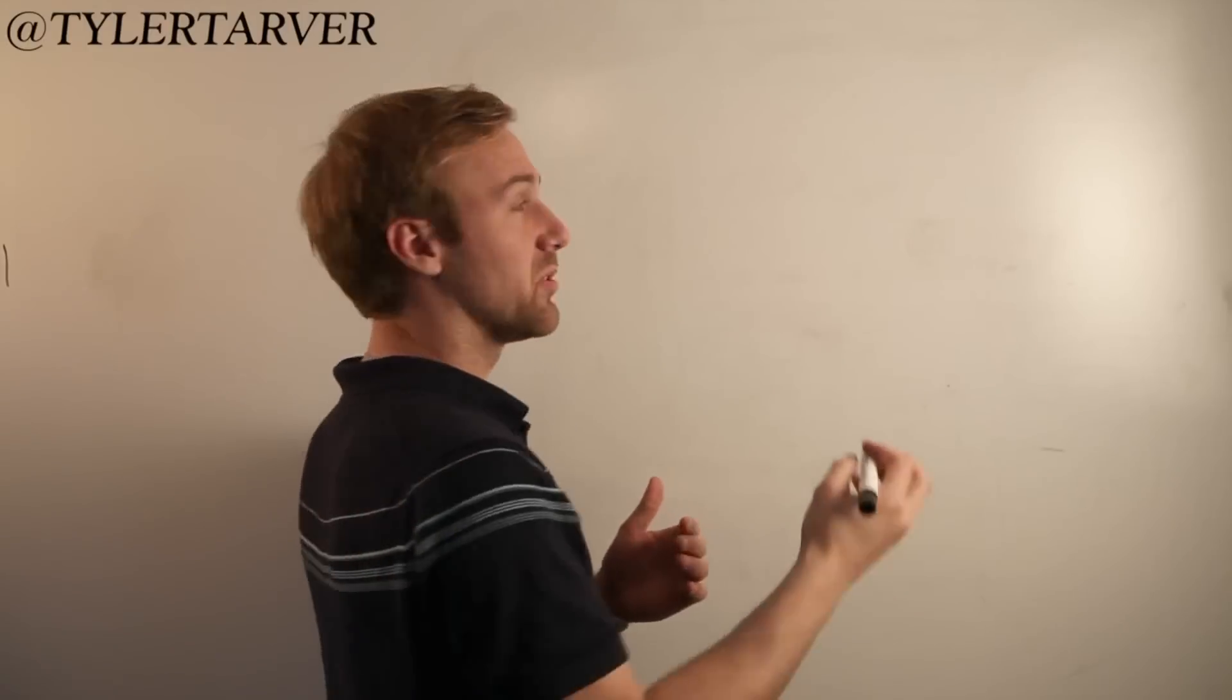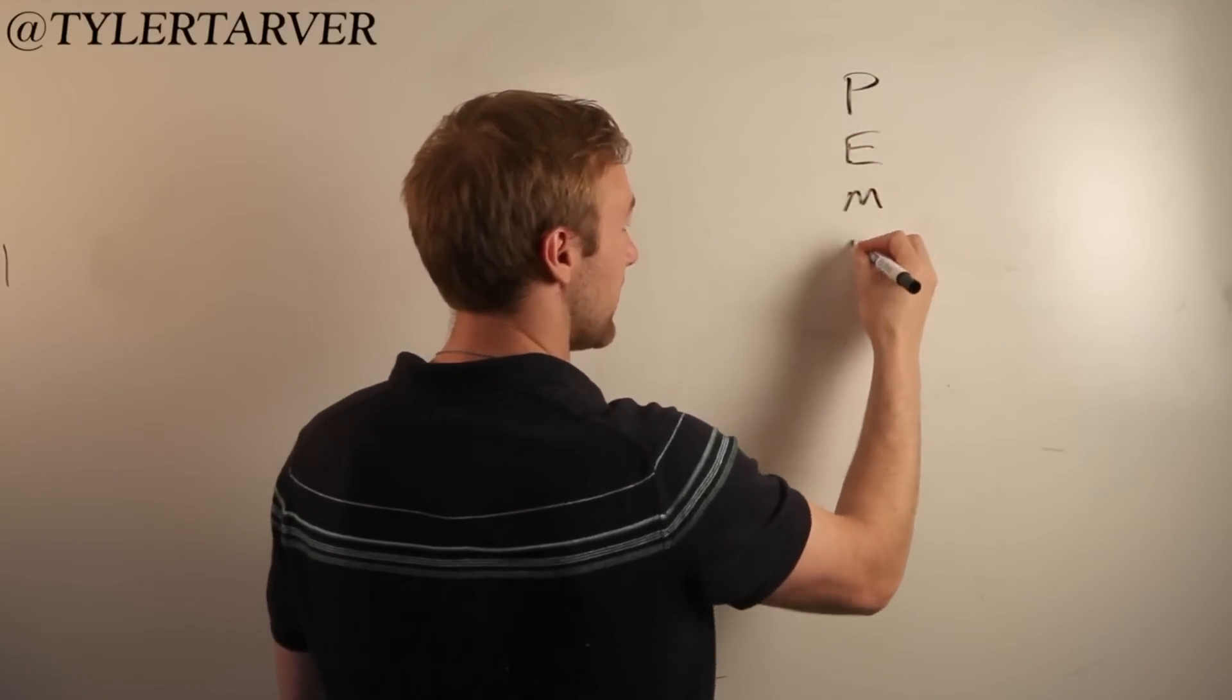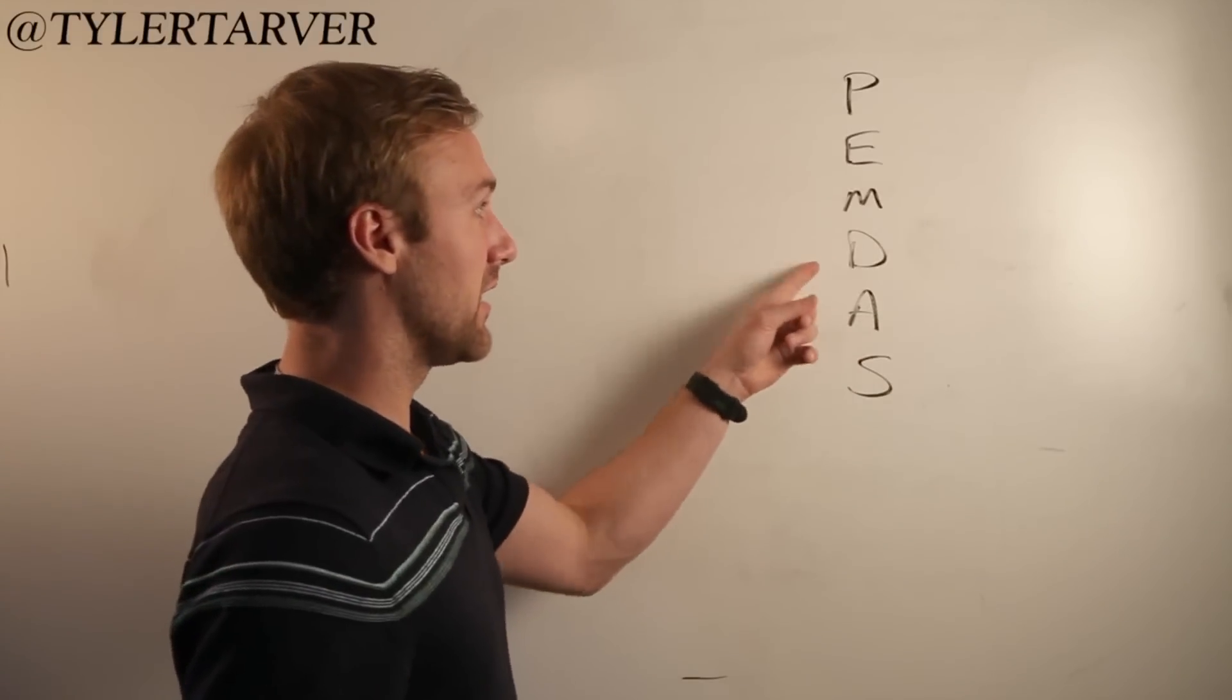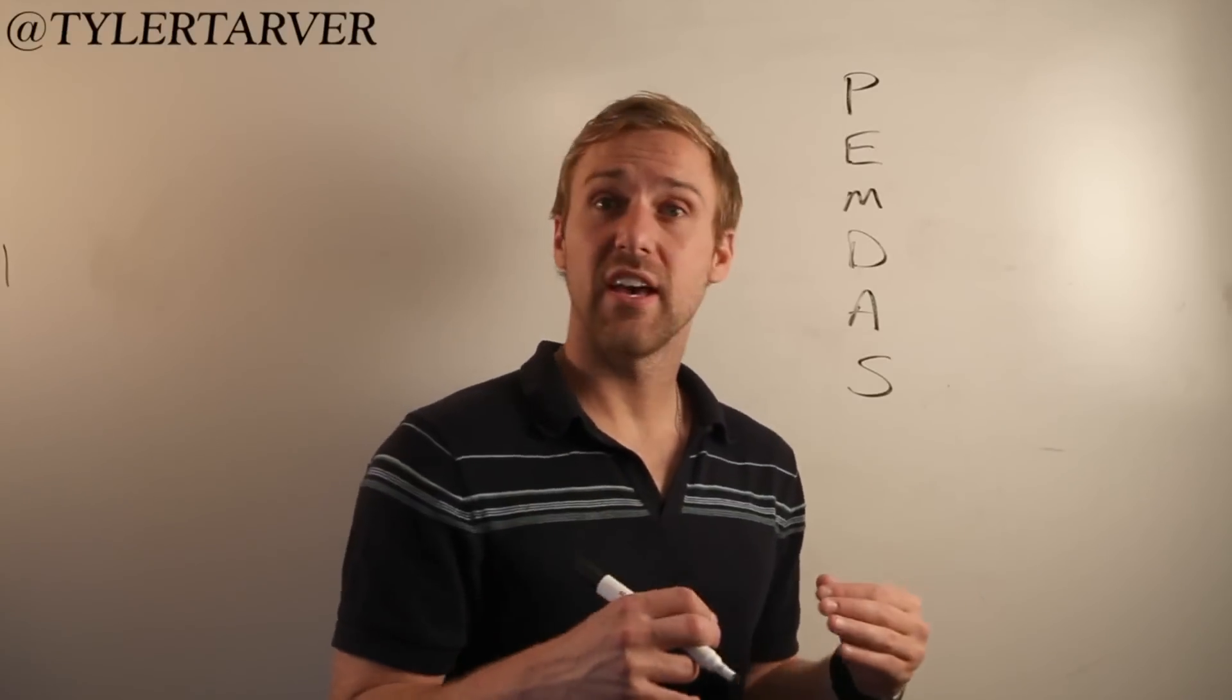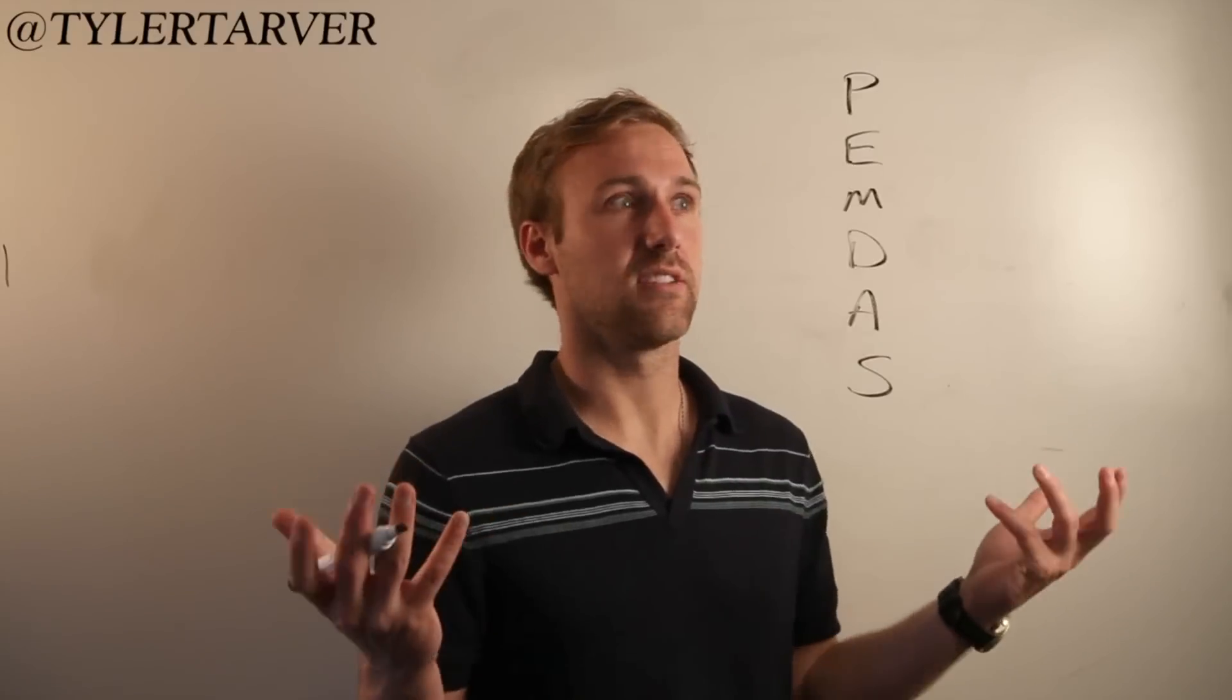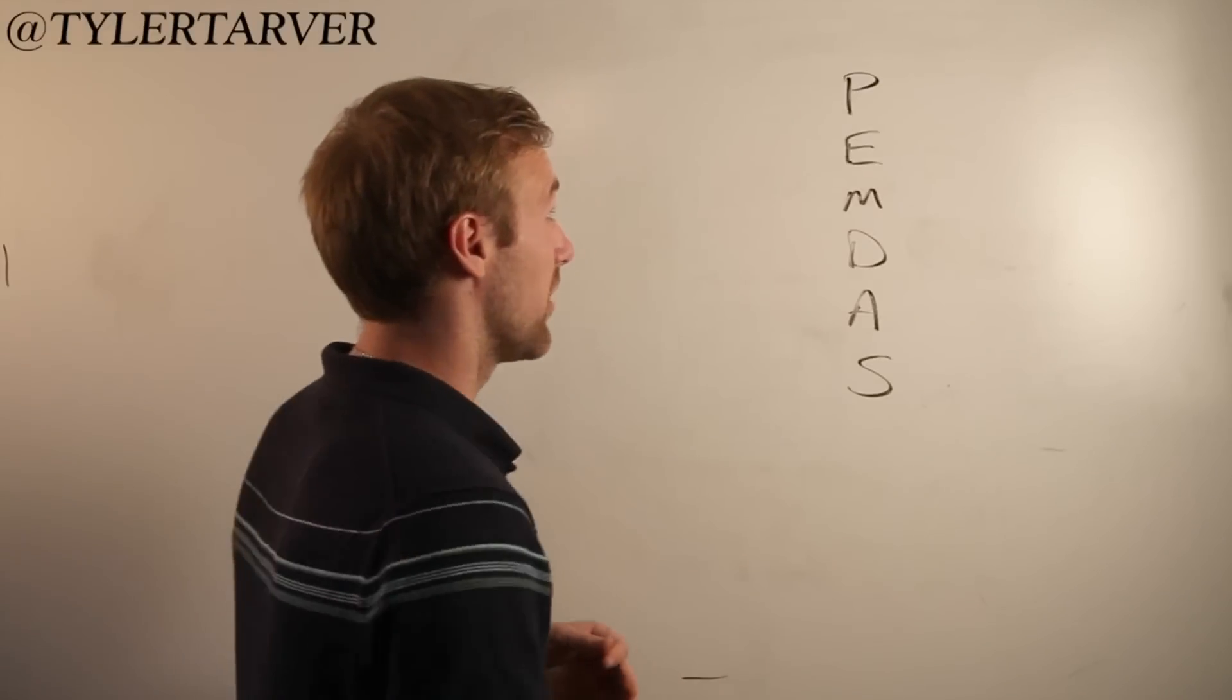This is the thing you'll always hear people say: Please excuse my dear Aunt Sally. This is the order in which you need to work an equation. Certain things are more important than other things. It's not like life where everybody gets a participation ribbon. This is like math where things are more important than other things.